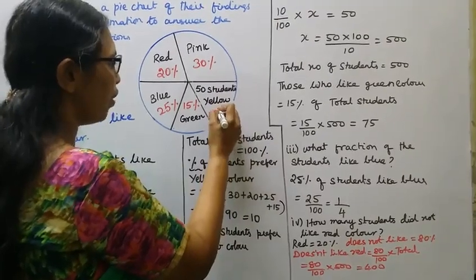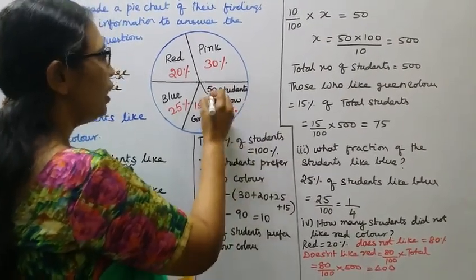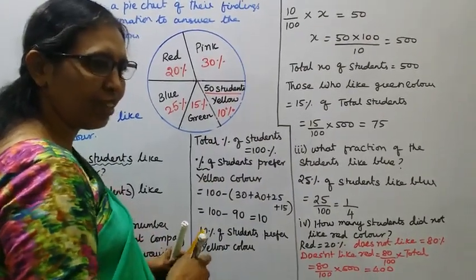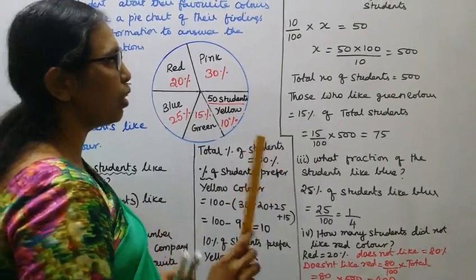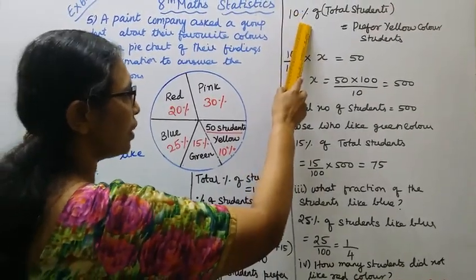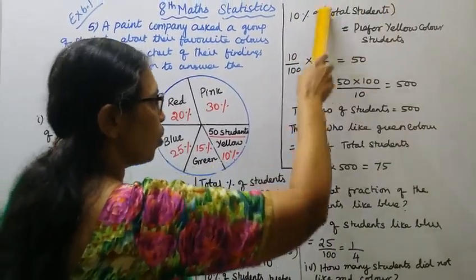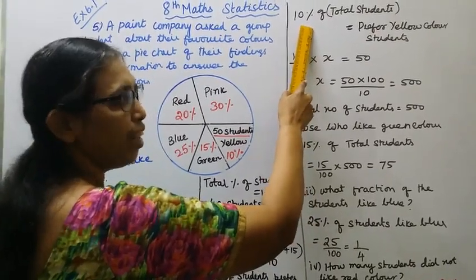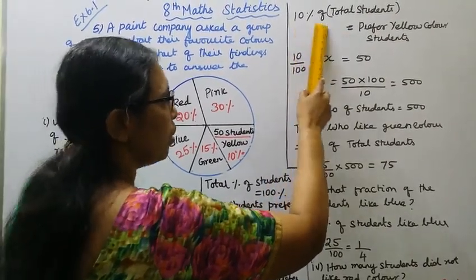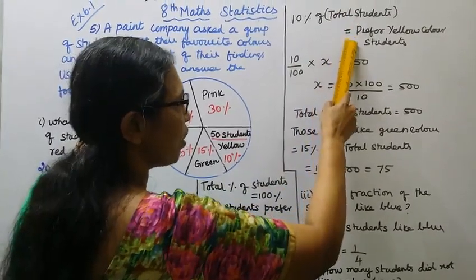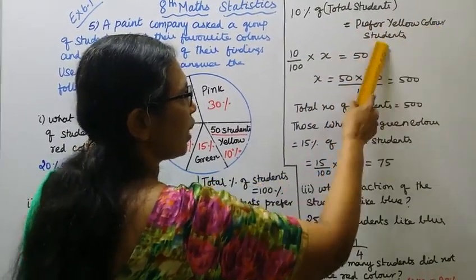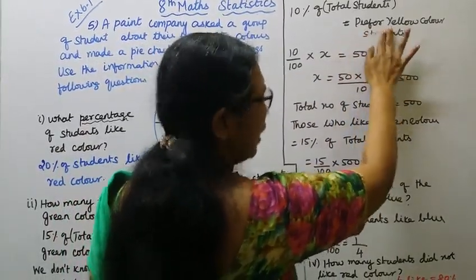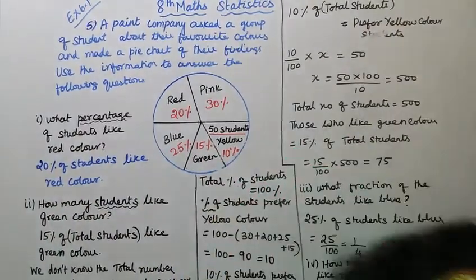Now we will find the total number of students. There are 50 students who prefer yellow color. We know that 10% of total students prefer yellow color, so we can calculate the total.